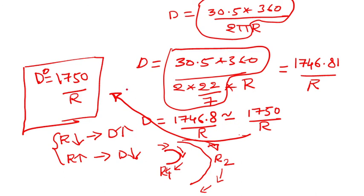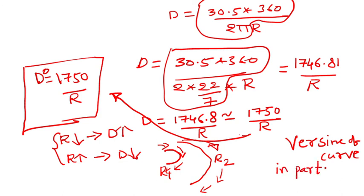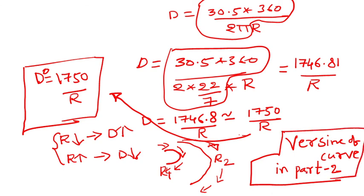This is the concept we have covered today. I hope you got a clear idea about degree of curve. In the next class — Part 2 — I want to tell you about versine of curve. But for now, remember that degree D is equal to 1750 divided by R. Thank you.